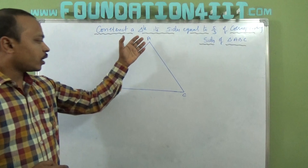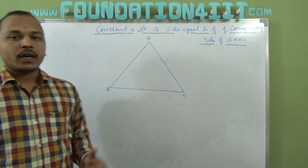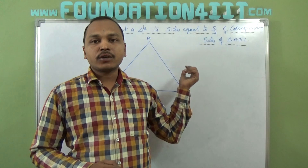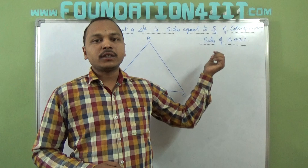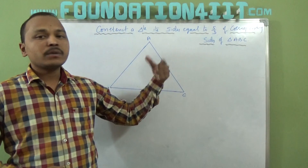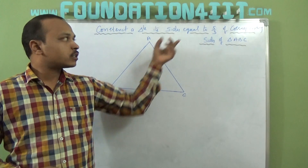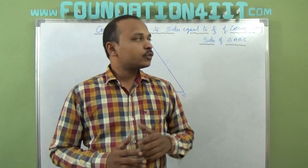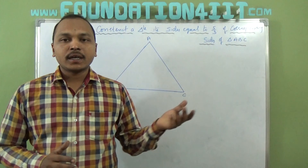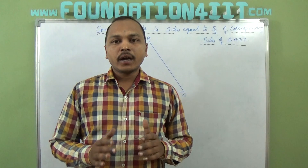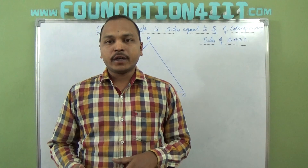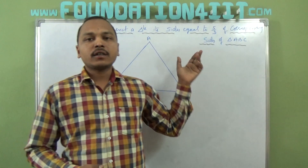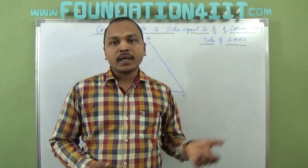So the ratio is 5/3. ABC is one triangle and I need to construct one more triangle which is similar to it but in ratio 5/3. That means the new triangle must be bigger than ABC because 5/3 is an improper fraction — the numerator is bigger than the denominator, so it is more than 1. The resulting triangle will come out bigger than the original.